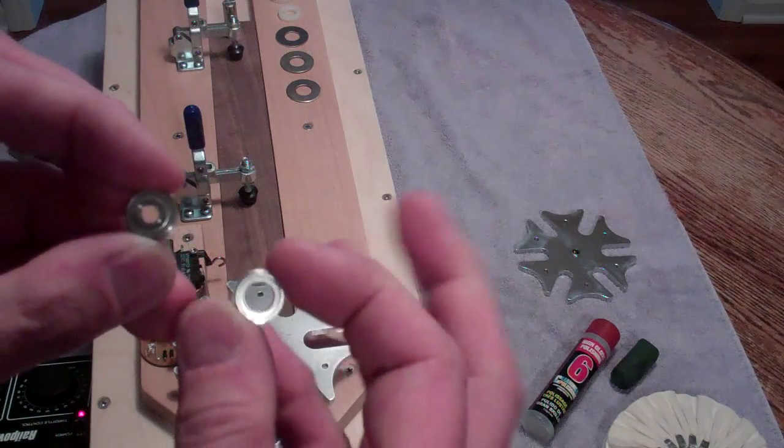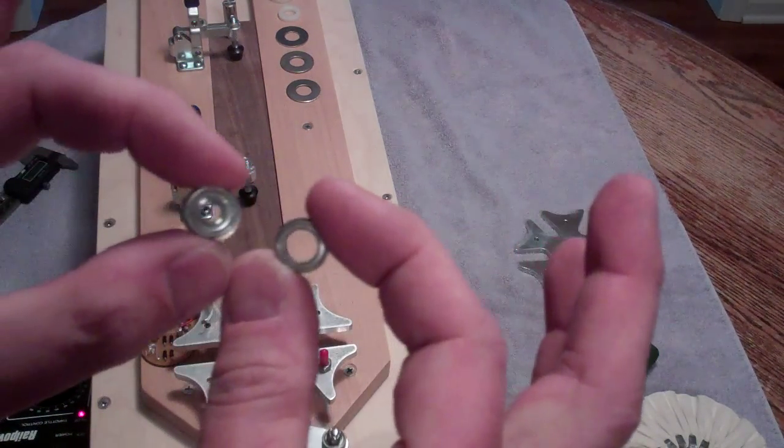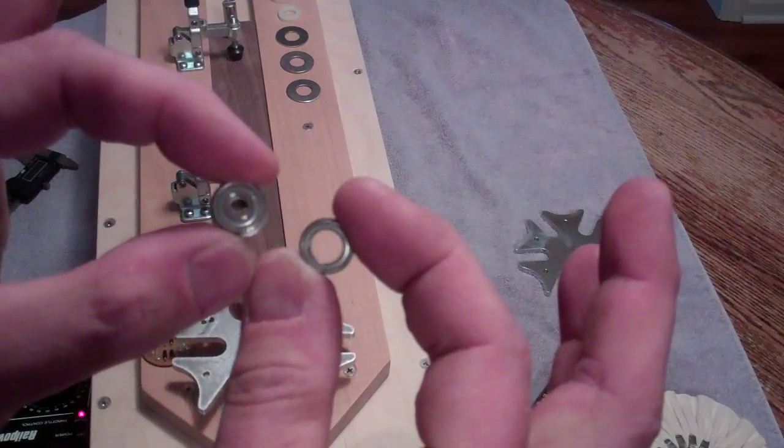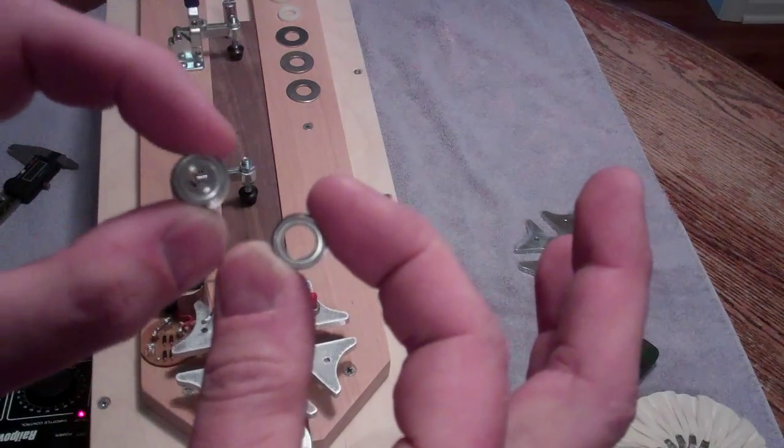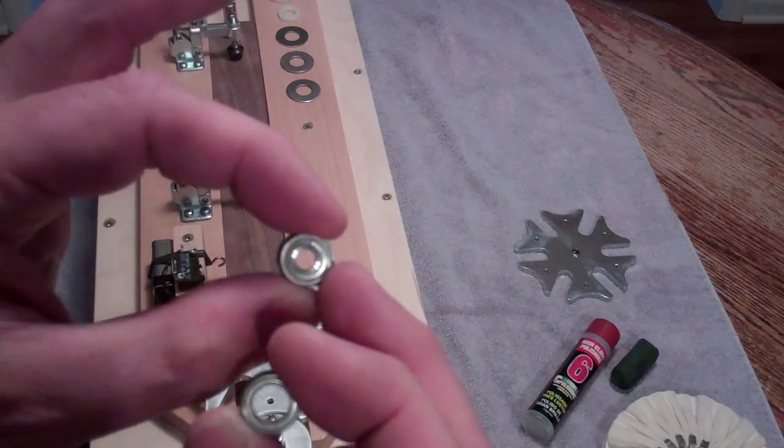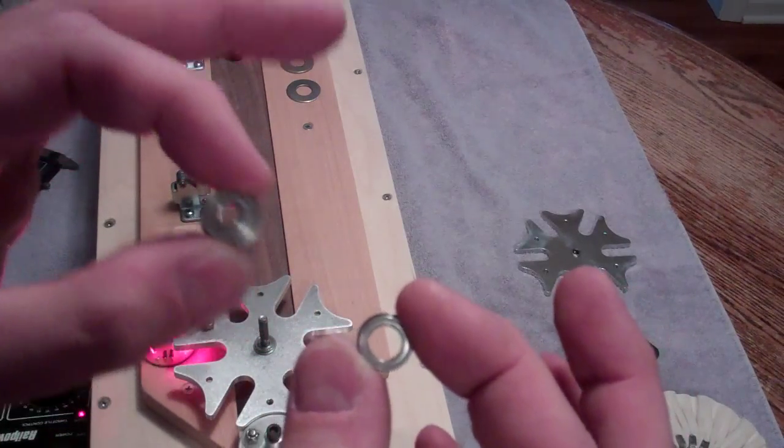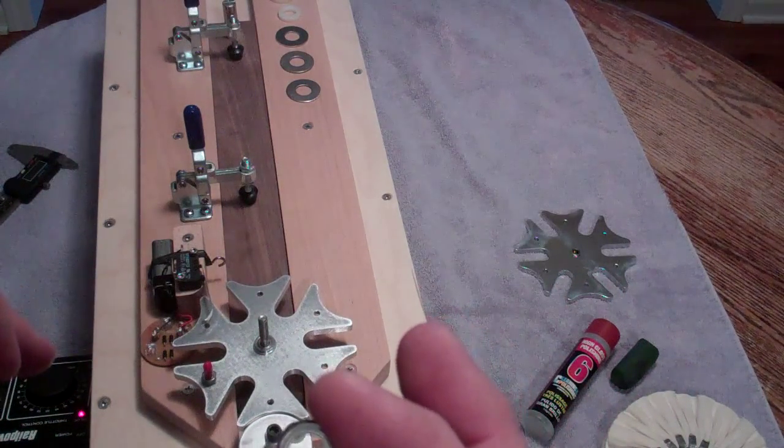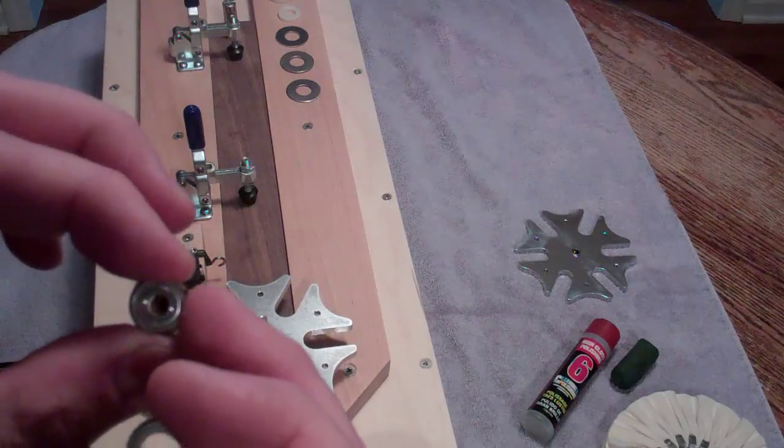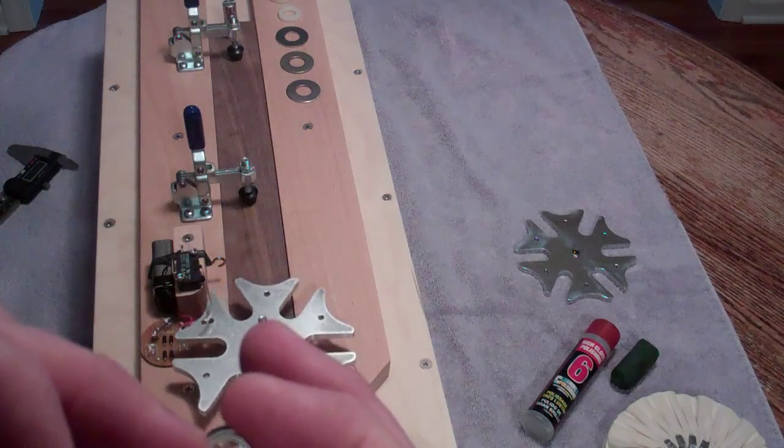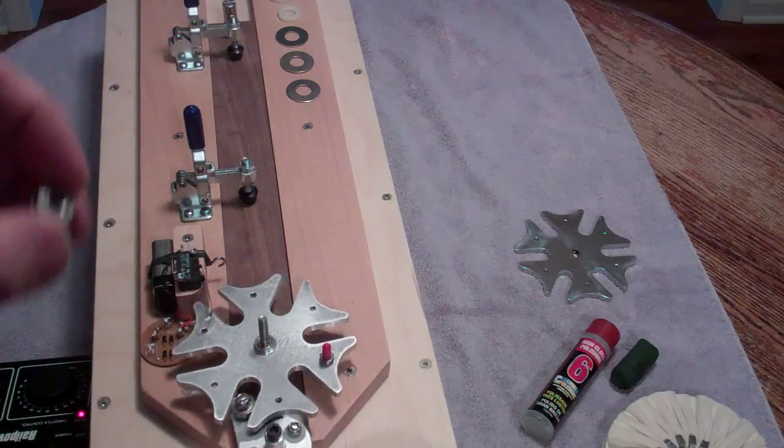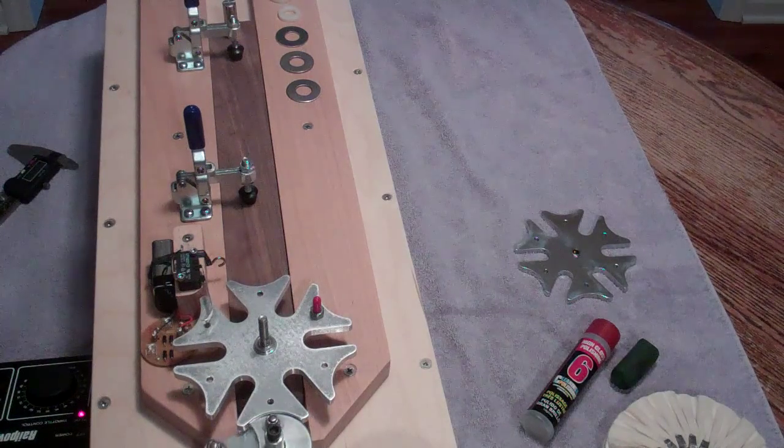These bearings can be had in many different sizes, and these are really cheap bearings. This one happens to be a three-eighths of an inch ID, and this one is a three-sixteenths of an inch ID. So you can pilot this wheel on a shaft that's three-sixteenths, one-quarter, three-eighths, or down at the other end, one-half inch. And I'm going to demonstrate that right now.